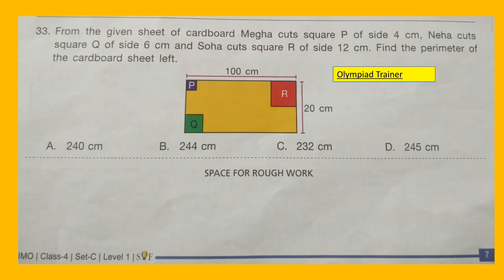Question 33: From the given sheet of cardboard, Mega cuts square P of side 4 cm, Neha cuts square Q of side 6 cm, and Soha cuts square R of side 12 cm. Find the perimeter of the cardboard sheet left.